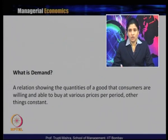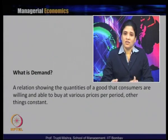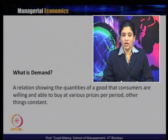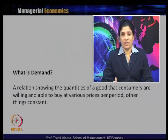Demand is basically a relation showing the quantity of a good that consumers are willing and able to buy at various prices per period, other things remaining constant. The other things — whether it is income, market situation, or forecasted prices — all other variables that have some say in demand for the product remain constant. The relationship between quantity of goods and price at a typical time period is generally what we call demand.